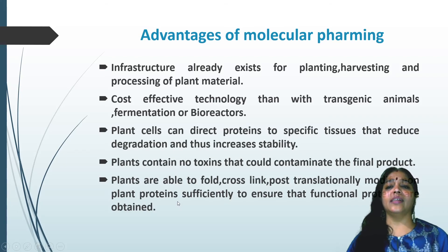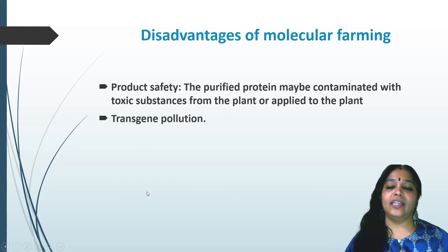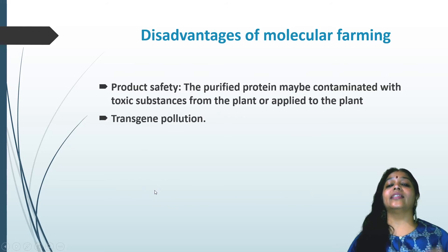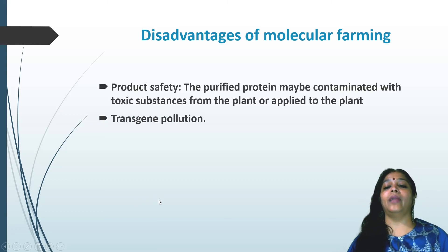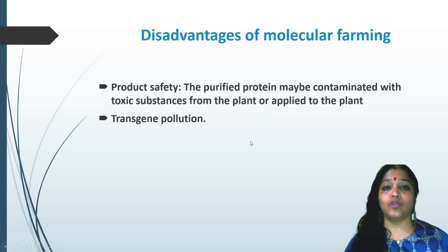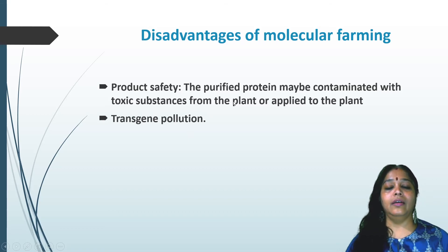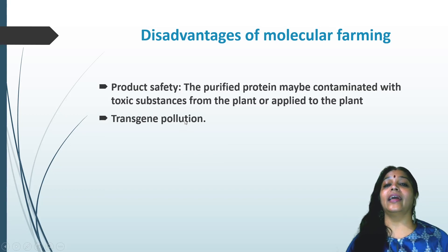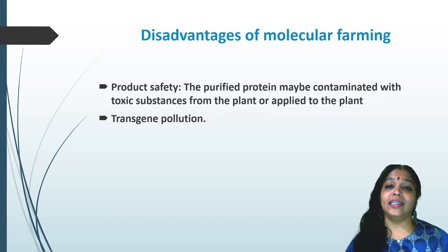The main disadvantage is product safety: the purified protein may be contaminated with toxic substances from the plant itself or from chemical fertilizers applied to it. Additionally, some internal plant metabolites may affect the protein. Another disadvantage is transgene pollution: the transgene may be transferred to non-transgenic plants via pollination, spreading the transgene unintentionally into the environment.